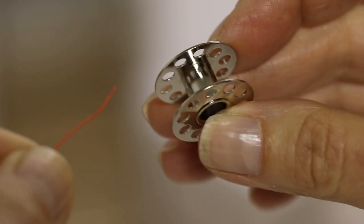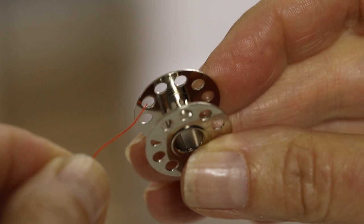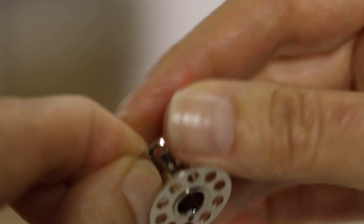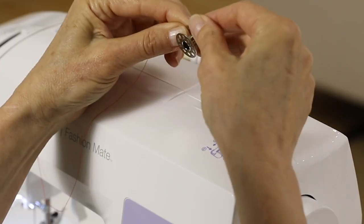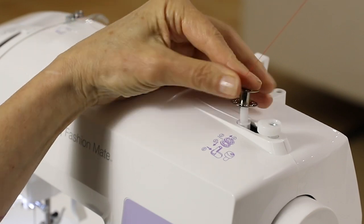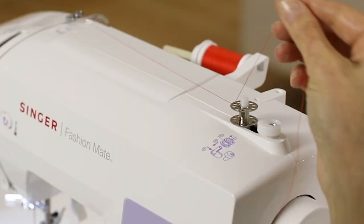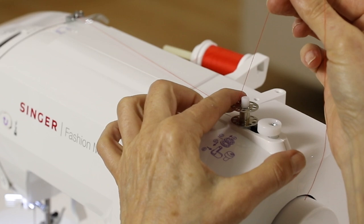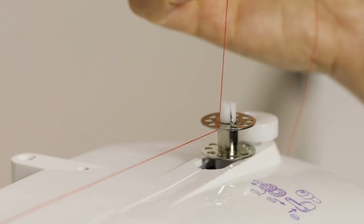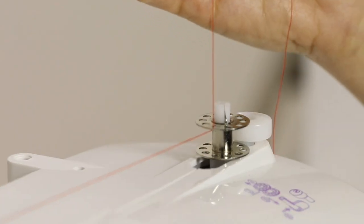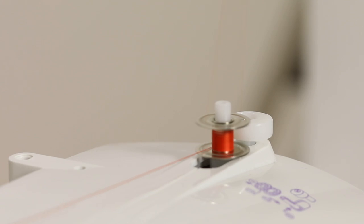Bring your thread to the right and go in from the center out through one of the holes of your bobbin and set the bobbin on the bobbin winding spindle. Hold your thread tail, press the bobbin to the right, then step on your foot controller to begin winding the bobbin.